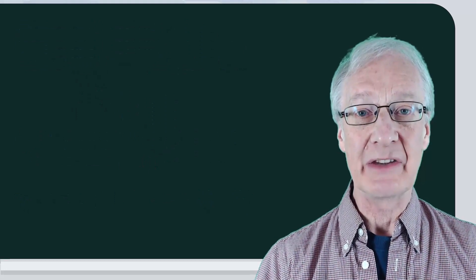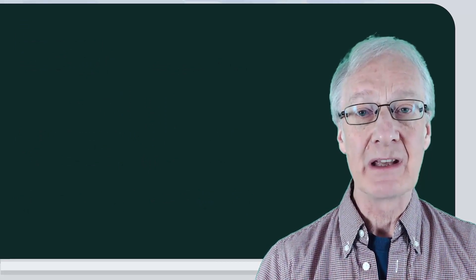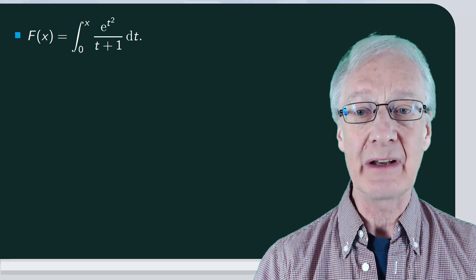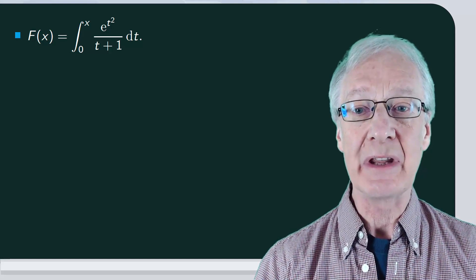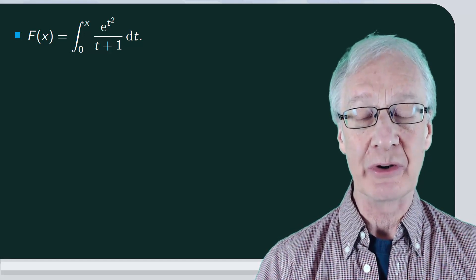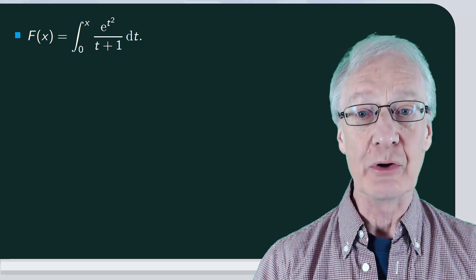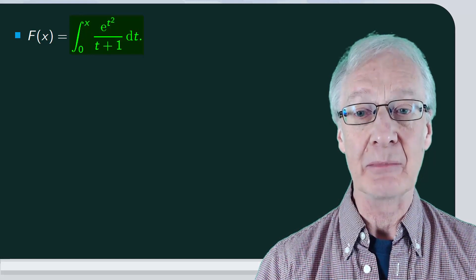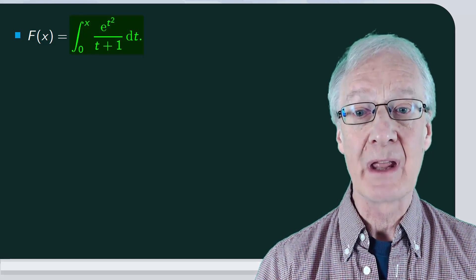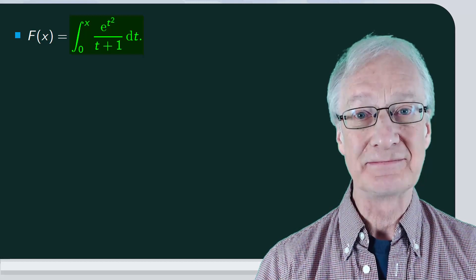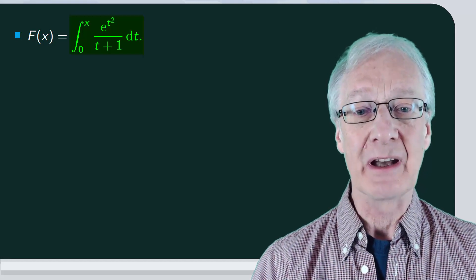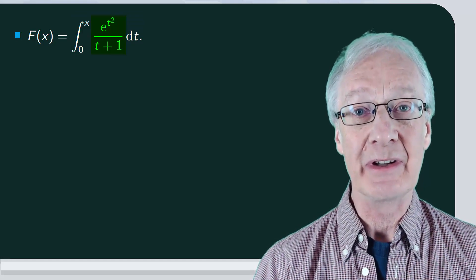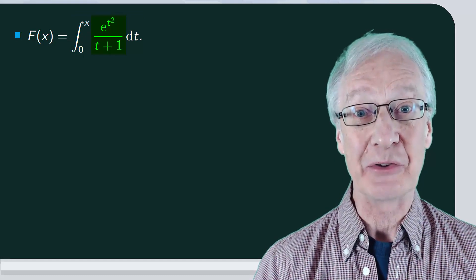The first example is a direct application of our result. Consider the function f of x equal to the integral between 0 and x of e to the t squared over t plus 1 dt. One approach would be to calculate a primitive, apply the second fundamental theorem of calculus, that is Barrow's rule, and then derive the result. But that's totally unnecessary and anyway, can you tell me a primitive of e to the x squared over x plus 1?